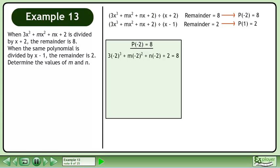Let's begin with p at negative 2 equals 8. Plug in negative 2 for x. Evaluate the powers and multiply. On the left side, negative 24 plus 2 equals negative 22. Add 22 to both sides of the equation to get 4m minus 2n equals 30. The equation can be reduced by dividing both sides by 2. This gives us 2m minus n equals 15.